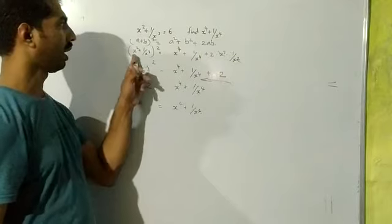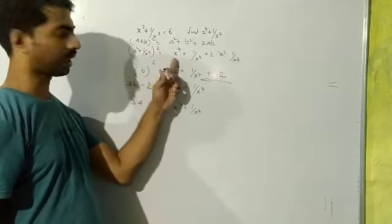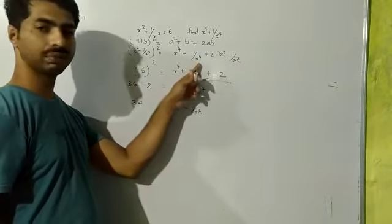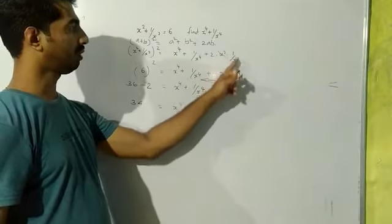So (x² + 1/x²)² = x⁴ + 1/x⁴ + 2·x²·(1/x²).